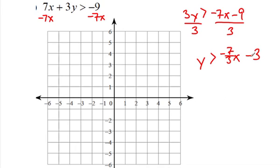So y is going to be greater than negative 7 thirds x minus 9 divided by 3 is 3. So I'm going to start at negative 3. Now can I go down 7? No. So I'm going to do this. I'm going to do up 7 over negative 3 because that's the same as this.